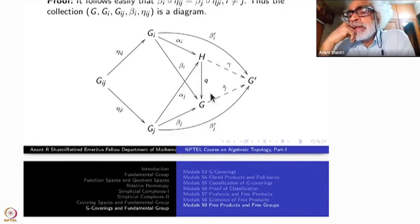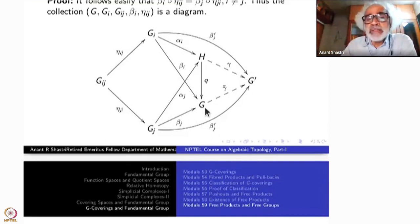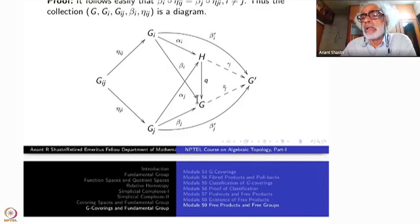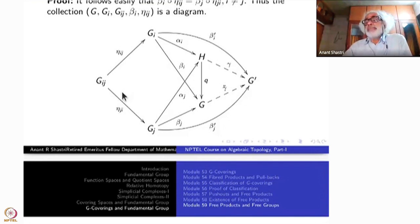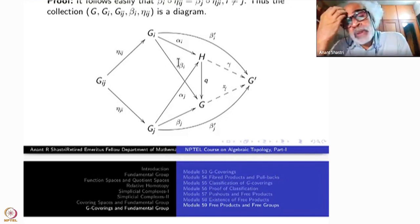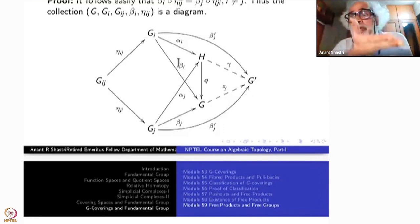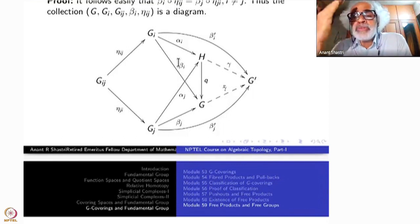Why is this unique? The uniqueness follows because if it is fitting here, then this composite must be gamma — but there is only one such map here and q is a surjective map. Once you say surjective map, if there are two maps fitting here such that their composite is gamma, there is only one such map. So gamma-bar must equal gamma prime-bar, because q is surjective. So that completes the proof of push-out diagrams very easily, once you know the free product. Free products are a special case which immediately gave you the general case.